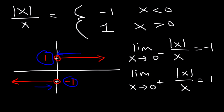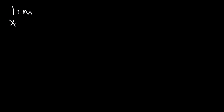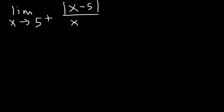So if you graph it, it can help you figure this out. Just remember: anytime you have the absolute value of a function, you can break it up into the positive version of the function or the negative version. Let's work on another example. What is the limit as x approaches 5 from the right of the absolute value of x minus 5 divided by x minus 5?